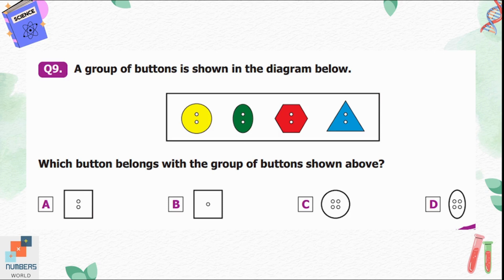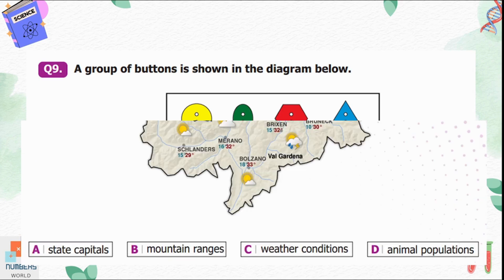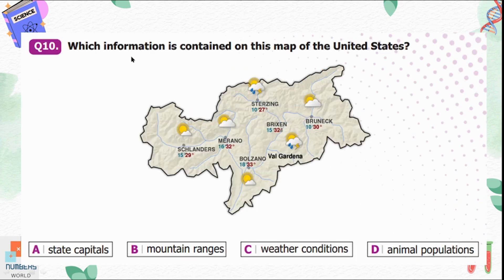Question number nine: a group of buttons is shown in the diagram below. Which button belongs with the group? We can see that there are two holes in each of the buttons shown. Option A belongs to the group because it also has two holes in it.